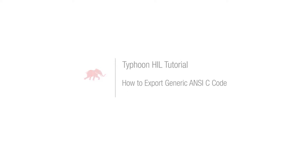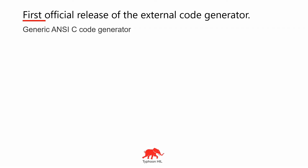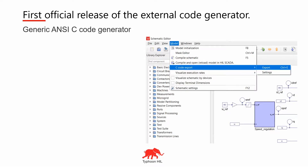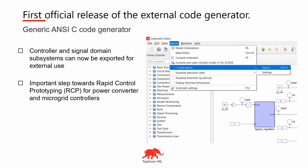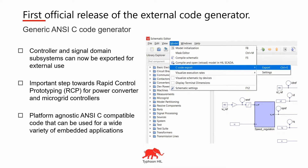Starting from release 2020.2, Typhon HIL Control Center will now be able to easily export generic NCC code, helping users to quickly build firmware for a compatible target and also test their own controller with generated code in a C-HIL environment. It helps the user to generate platform-agnostic NCC compatible code that can be used for a wide variety of embedded applications.